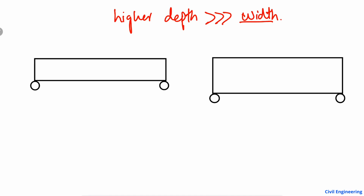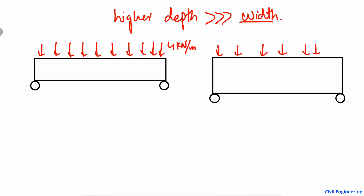I'm going to explain this with a simple and easy example. If I apply a load on two beams — for example, a uniformly distributed load of 4 kN per meter on each beam — and both beams have the same length of 5 meters, what will happen?